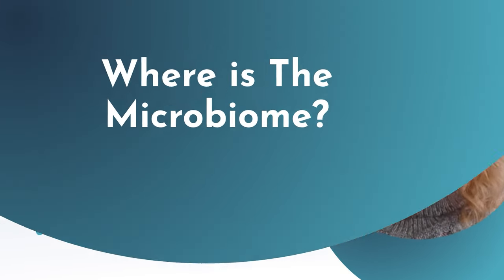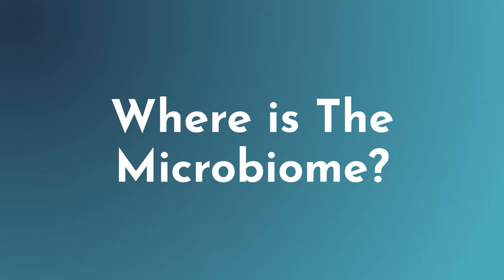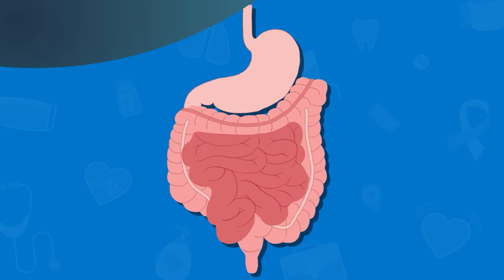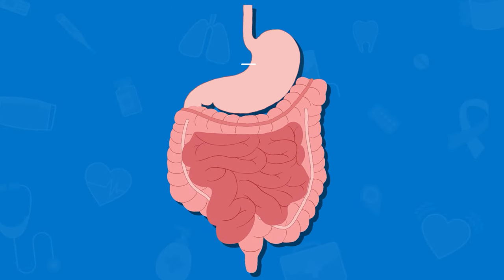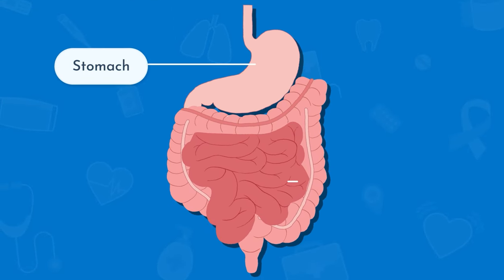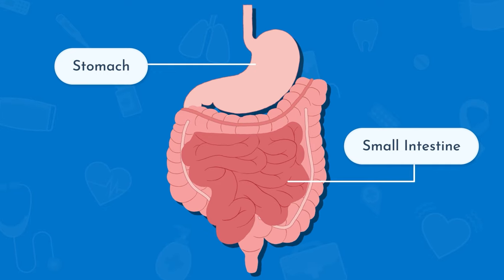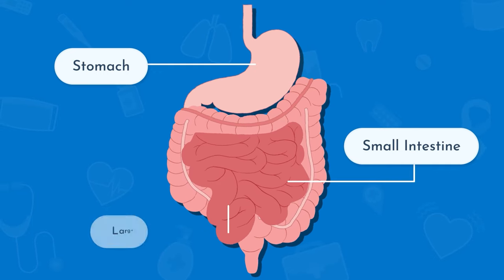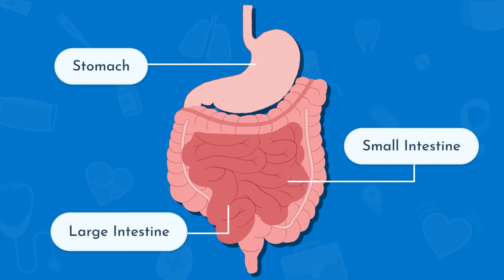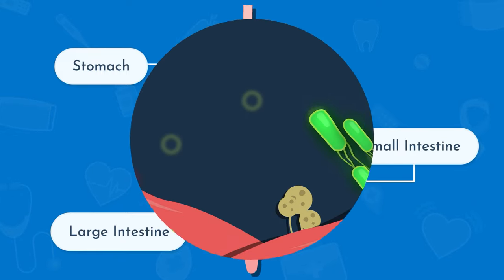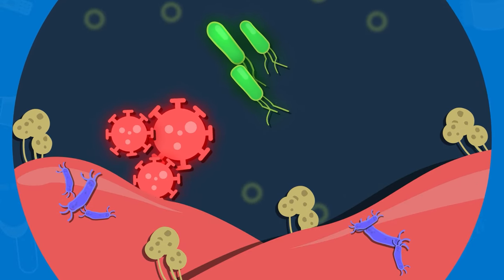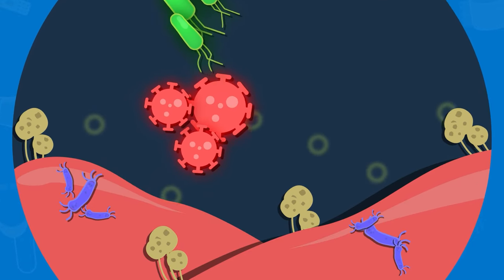Where is the microbiome? It's hiding out in the digestive tract — when we say the gut, we mean the stomach and the small intestine, but the majority of those microbes are in the large intestine or the colon. They float around inside or are attached to the mucous lining on the inner walls of the gut.